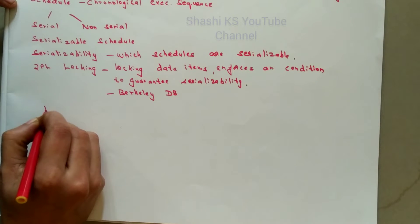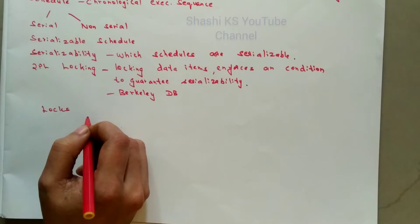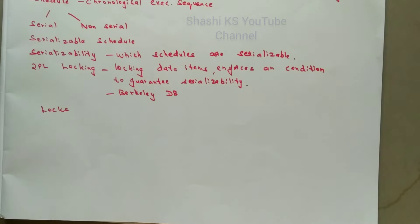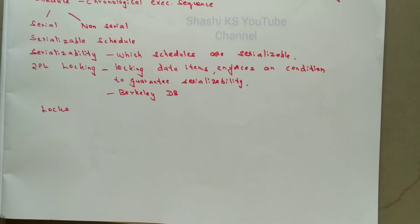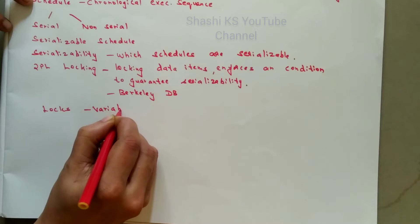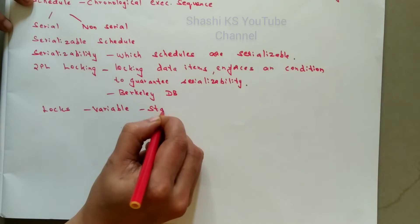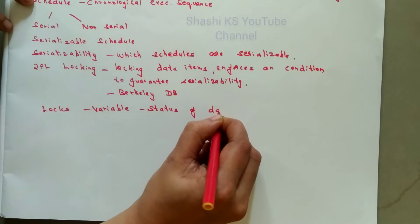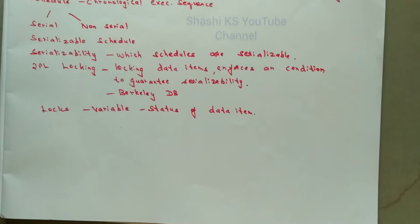Now we need to know the concept of locks. There are three types of locks. A lock is nothing but a variable associated with the data item which describes the status of the item with respect to the operations that can be applied on it. Lock is a variable used to describe the status of the data item — specifically, which operations can be applied on the data item at any point of time. This lock is useful for synchronizing the access between concurrent transactions executing in a database.